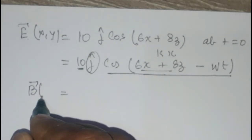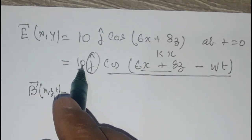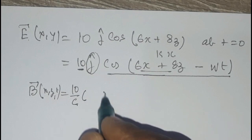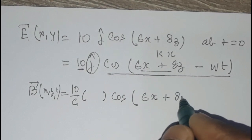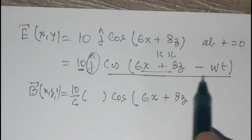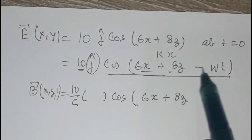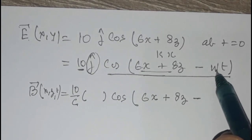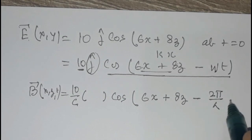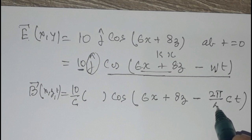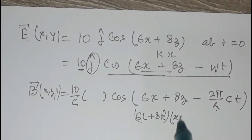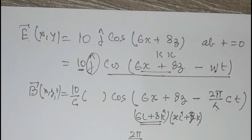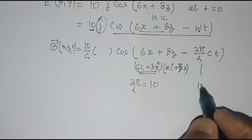To find B(x,z,t), we need the direction of the magnetic field and the value of ω. From the wave vector (6i + 8k), the magnitude is √(6²+8²) = 10 = 2π/λ. So the full equation at any time t includes the term −10ct. The unit vector of propagation is (6i + 8k)/10.